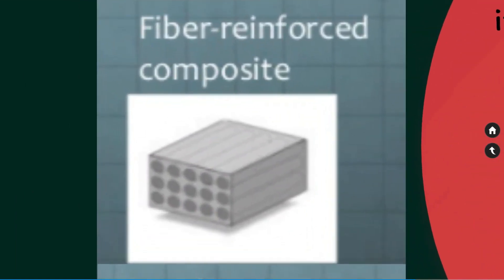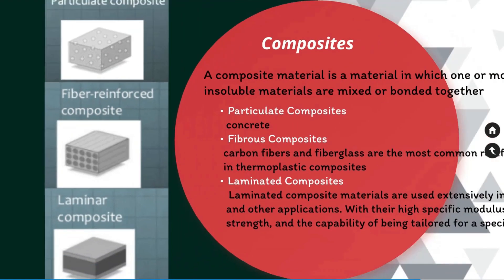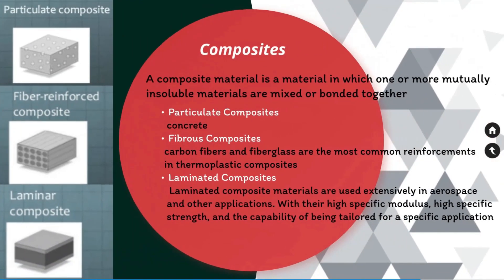A fibrous composite is a material in which fibers of one material are embedded within another. The fibers carry most of the stresses acting on the material. The fibers can be short or randomly oriented, or they can be long and continuous. Carbon fibers and fiberglass are the most common reinforcements in thermoplastic composites.